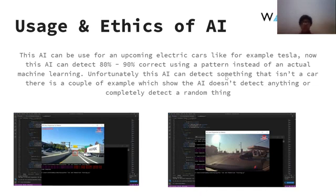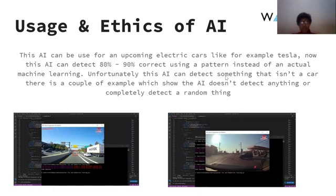Unfortunately, this AI sometimes detects something that isn't a car, or isn't detecting anything, which is pretty weird. But as I said, it's using a pattern instead of actual machine learning — so it's basically like slapping something onto the image and seeing if it's correct or not. As you can see with the two pictures below: in picture one, it actually detects something that isn't a car — it's just a shadow that the AI detects as a car. And in the second one, there is a car that the AI isn't detecting.